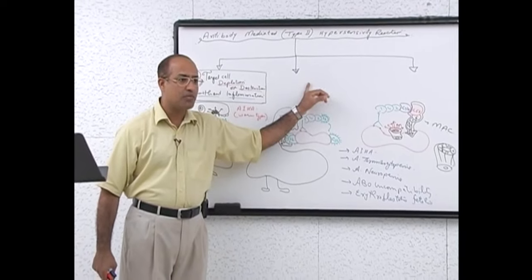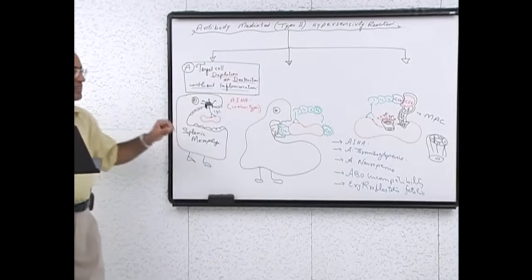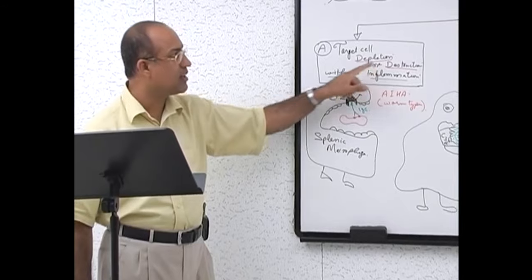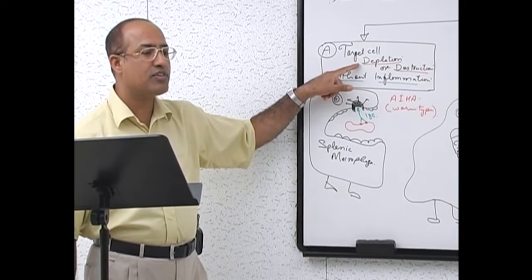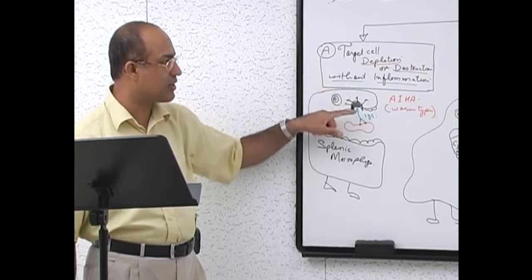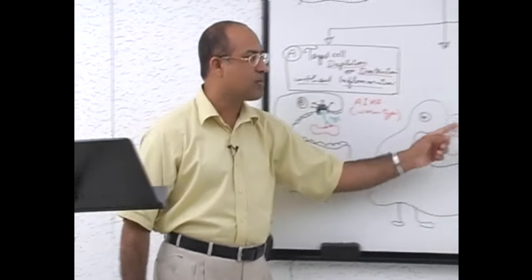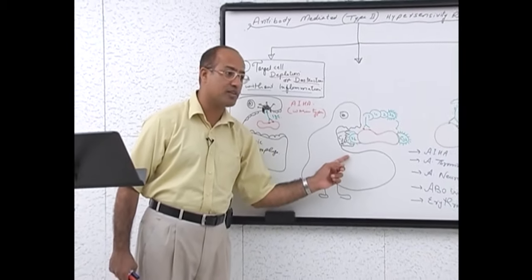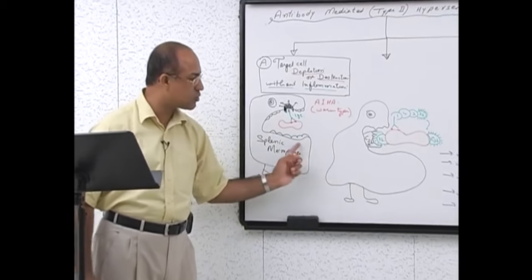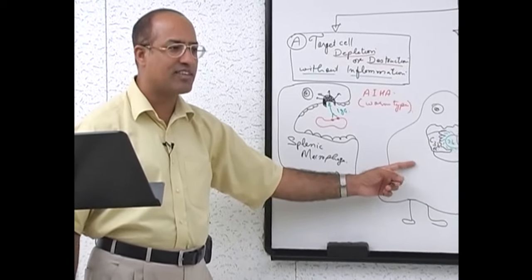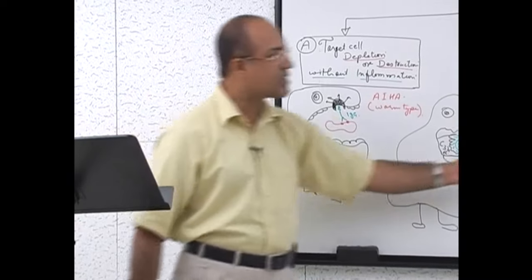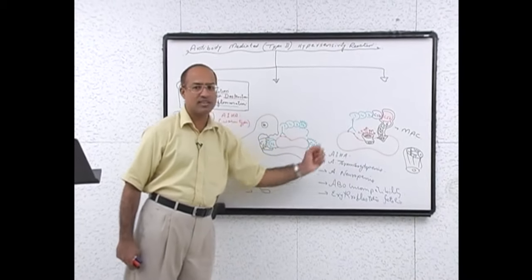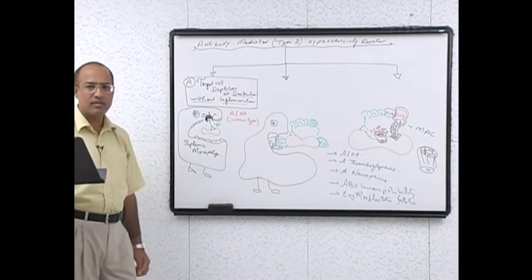In erythroblastosis fetalis, an Rh-negative mother makes anti-Rh antibodies. Anti-Rh antibodies belong to the IgG class and can cross the placenta. They go to the fetus and bind with the fetal RBCs and destroy them. These are all examples of type 2 hypersensitivity reaction with cell destruction or depletion without significant inflammation. In category A, cells are either depleted by facilitated phagocytosis — directly via IgG or via C3b — or destroyed by the membrane attack complex.